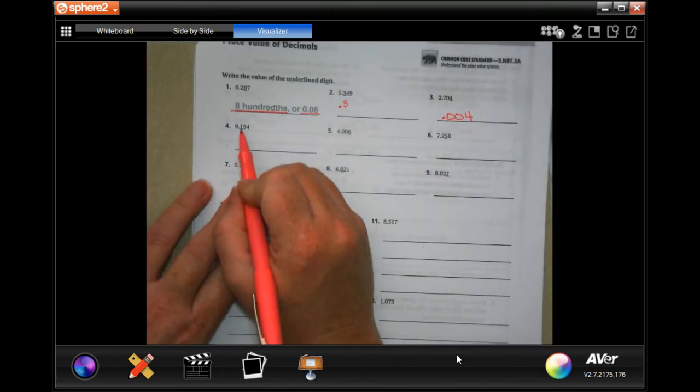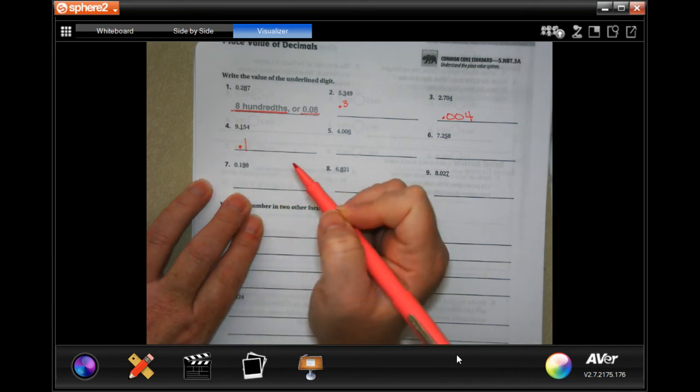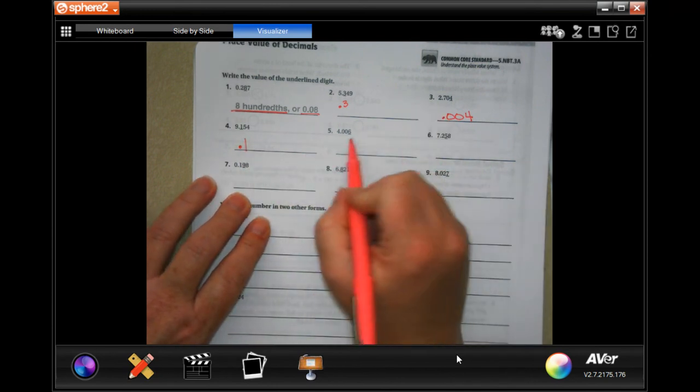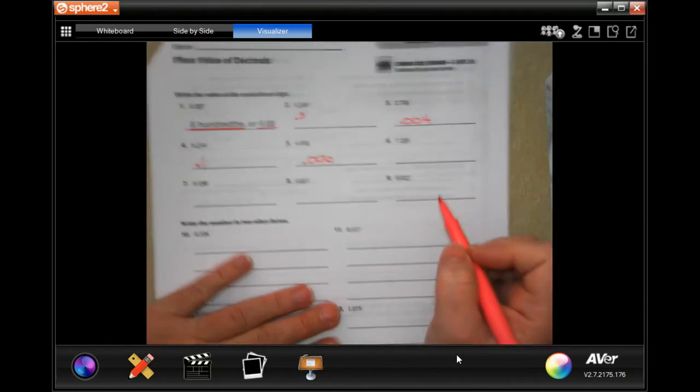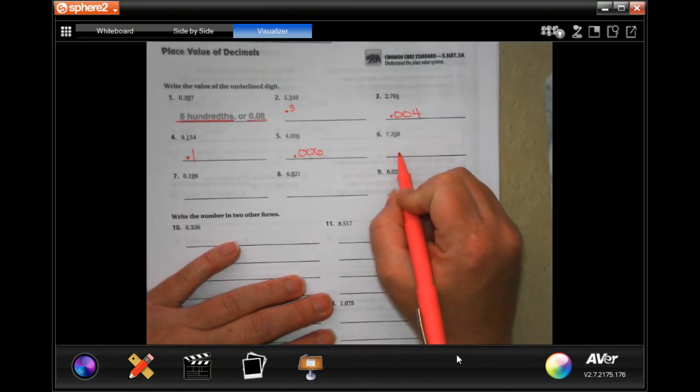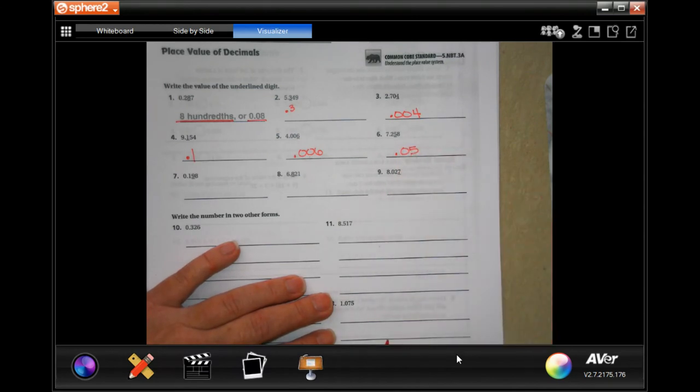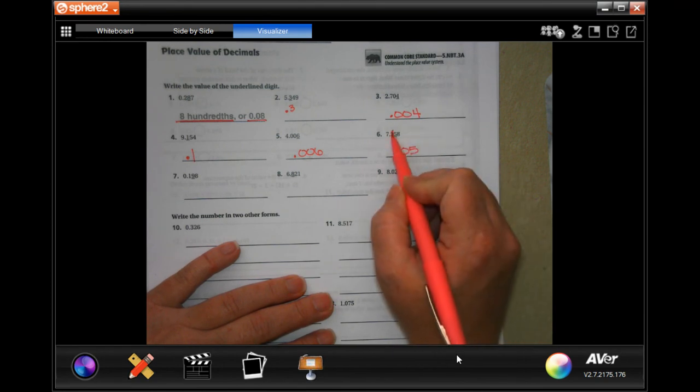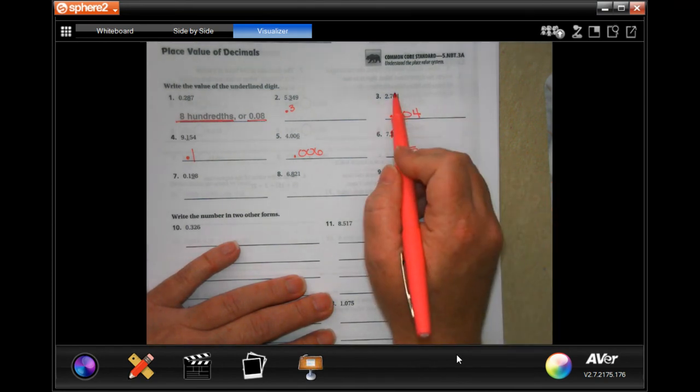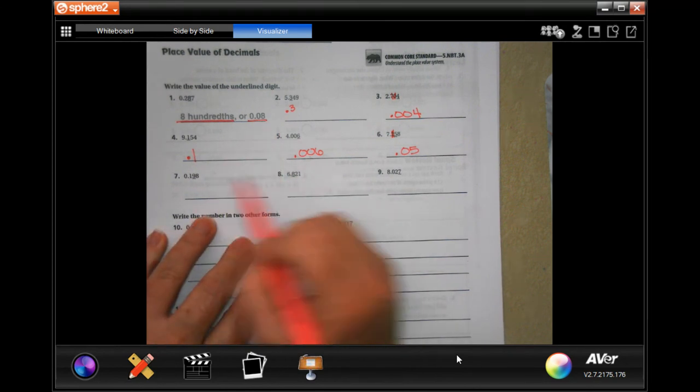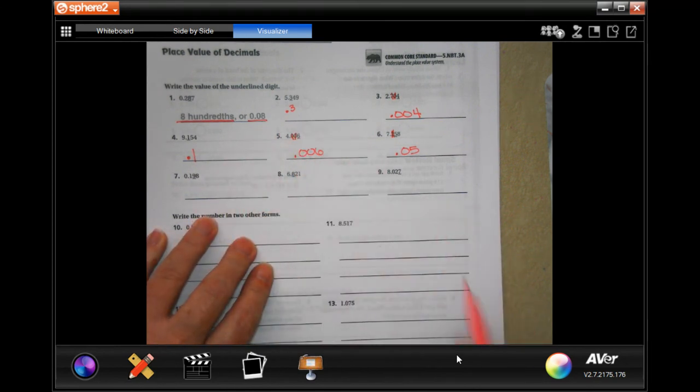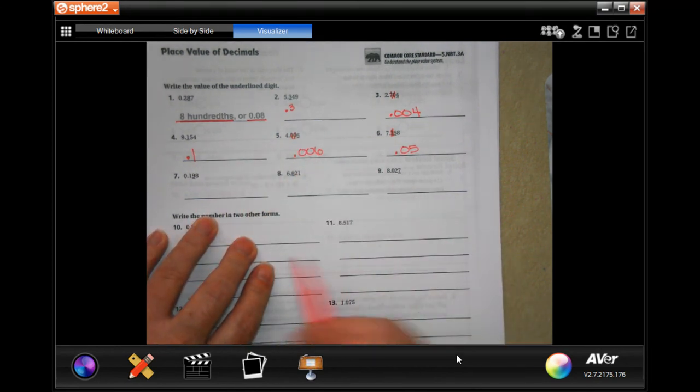Point one right after the decimal, don't have to worry about a placeholder. Zero all the way at the end, placeholder zeros. One from the decimal, placeholder zero. So all of these numbers right here, they all need to become zeros. All right, you guys do seven, eight, and nine.